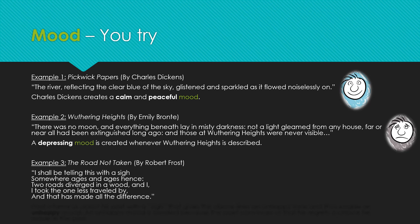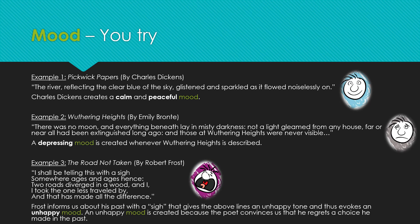The last example is from The Road Not Taken by Robert Frost: 'I shall be telling this with a sigh, somewhere ages and ages hence, two roads diverged in a wood, and I took the one less traveled by, and that has made all the difference.' Especially focus on the word sigh. Frost informs us about his past with a sigh, which gives these lines an unhappy tone and evokes an unhappy mood. An unhappy mood is created because the poet convinces us that he regrets a choice he made in the past.